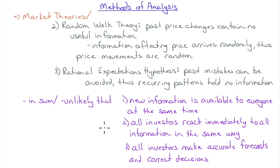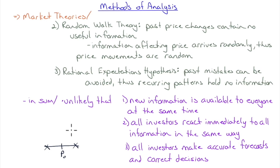If we look at the Efficient Market Hypothesis carefully, prices can't possibly reflect all available information because not everyone acts on that information, not all investors react immediately, and not all make accurate forecasts. An efficient market means that on average the market is wrong on the upside just as often as it's wrong on the downside — overvaluing stocks with the same frequency as undervaluing them. A market is biased if it consistently underprices or overprices assets.